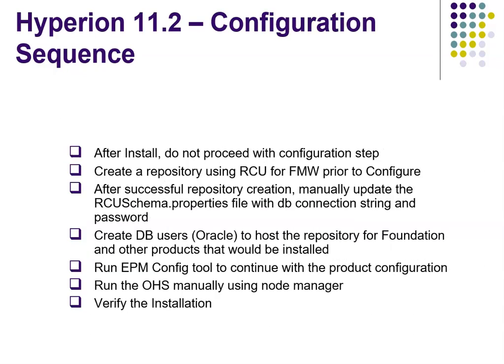This screen talks about the configuration sequence. Once we have a successful installation, these are the steps we will proceed with. The first step after install is: never proceed with configuration immediately — just click Finish and come out of the installation steps. Then open the Repository Creation Utility and create a repository. For this you need to have a system administrator or DBA role. This is for Fusion Middleware.